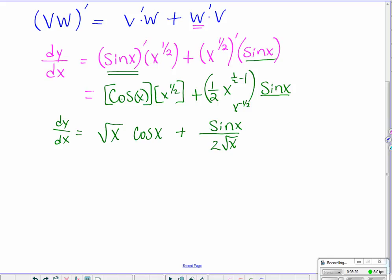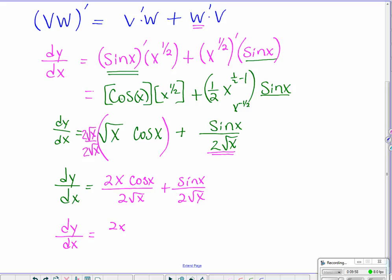That is an okay answer. If you had to make it one fraction, which let's go ahead and do, I would want to multiply my first by square root x over square root x, to make the same denominator in both of them. That's going to give me 2 times x times the cosine of x over 2 square root x, added with sine x over 2 square root x, which simplifies into 2x cosine x plus sine x over 2 square root x. It wasn't that it was wrong up here, it's just we could make it into one fraction.